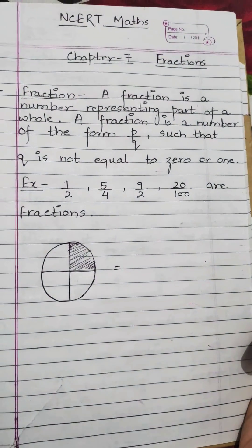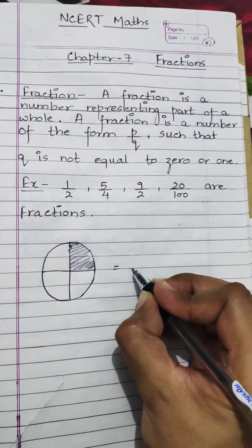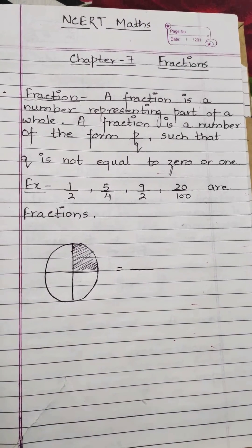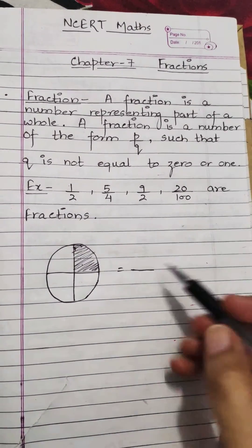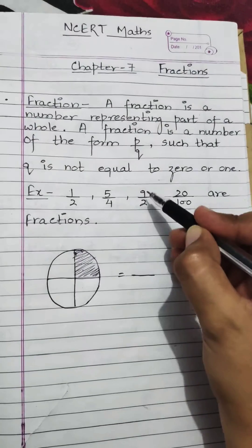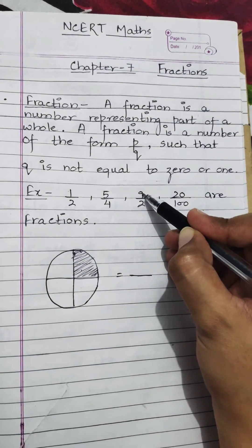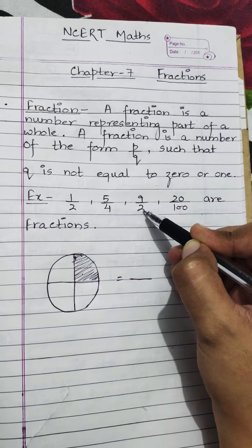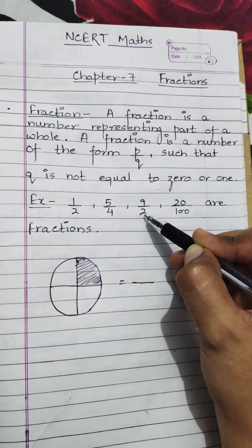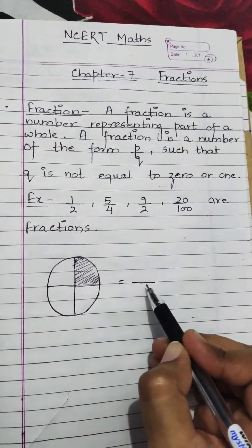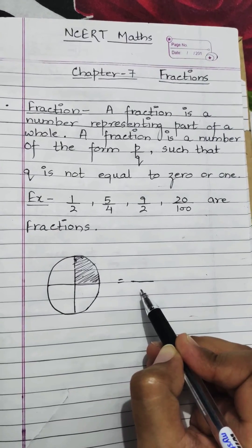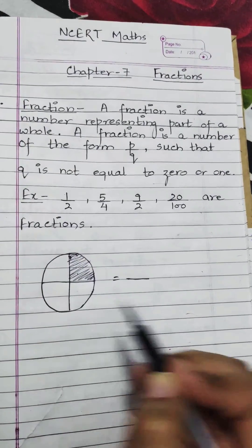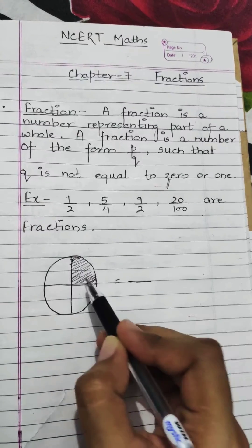Whenever we are writing a fraction, there are two parts: the first one is the numerator, which comes at the upper side, and the other one is the denominator, which is the number written at the bottom. Whenever we have to write the denominator, we always write the total quantity as the denominator.